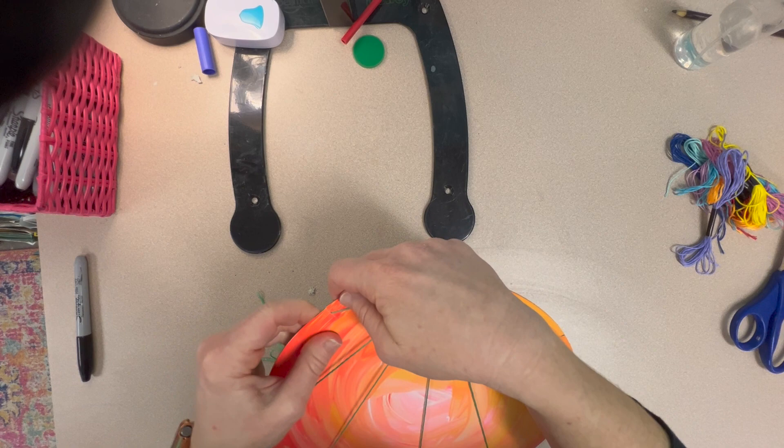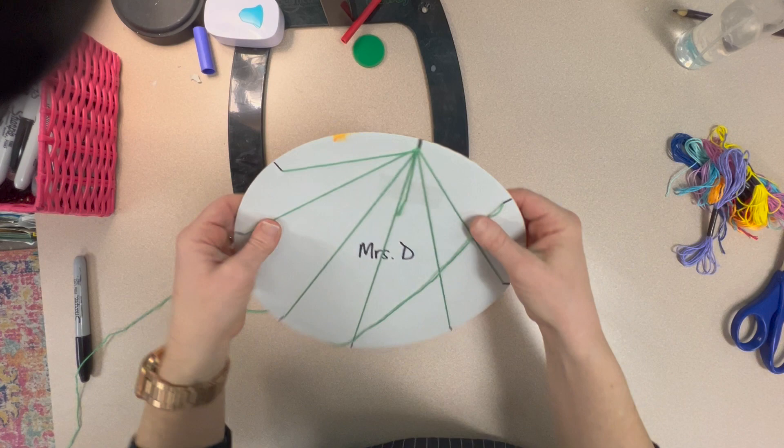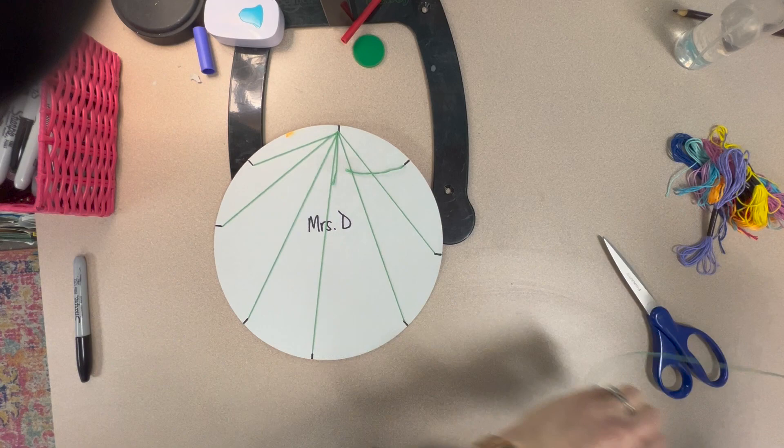When you get to the last one, you can take a pair of scissors and trim the extra thread off and take a piece of tape and tape it down.